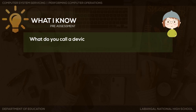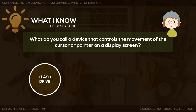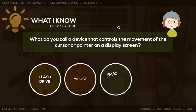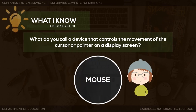Next question: What do you call a device that controls the movement of the cursor or pointer on a display screen? Is it a flash drive, a mouse, random access memory, or a motherboard? The correct answer is mouse — very good!